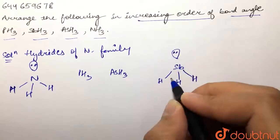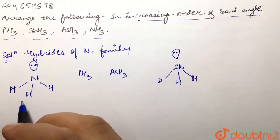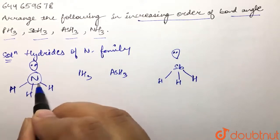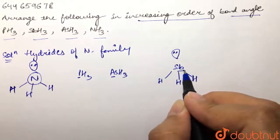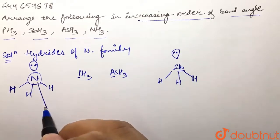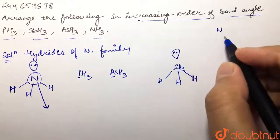So over here, this is nitrogen, the central atom. And over here we have central atom phosphorus, and then we have As, and then we have Sb. As we are moving down the group, we are moving like this.